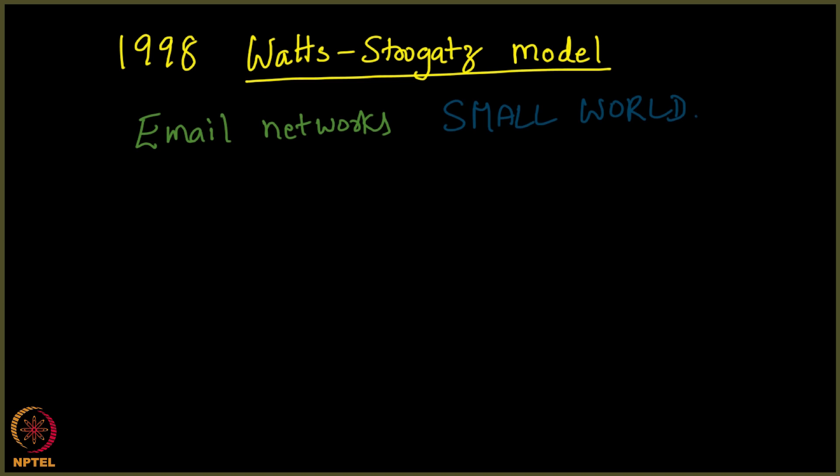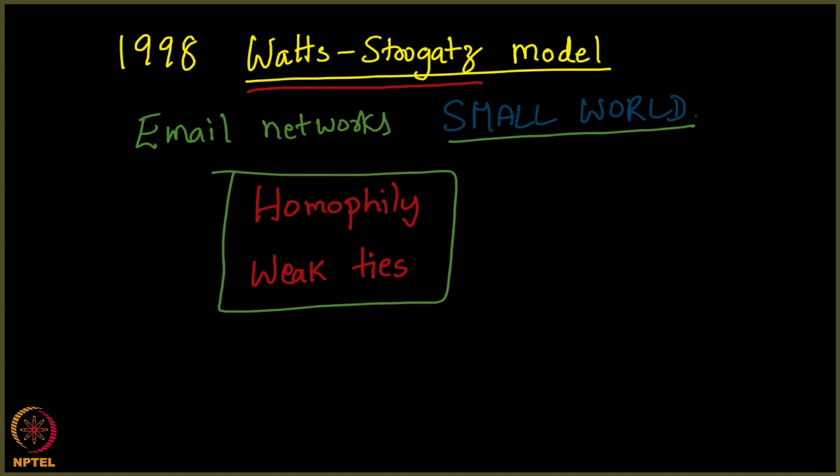It was not way too surprising for them and they went ahead and proposed that the possible reason why this is happening is because of two concepts which we indeed saw already: homophily and the concept of weak ties. The first nice explanation was indeed given by Watts and Strogatz.